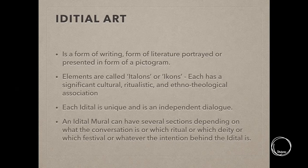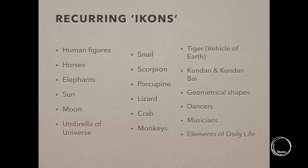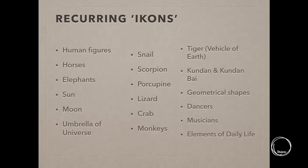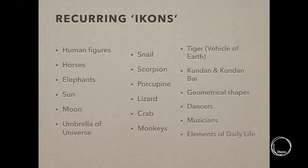The most recurring italons or icons include human figures — very similar in style to Warli art — along with animal figures, horses, and elephants. Celestial and cosmic motifs like sun and moon are common, as is the 'umbrella of universe.' Other recurring motifs include snails, scorpions, porcupines, lizards, and tigers — the tiger being the vehicle of the earth deity, similar to how horses function in Pithora art. There are also motifs related to their shamans, Kudanbai, geometrical shapes, dancers, musicians, and elements of daily life.